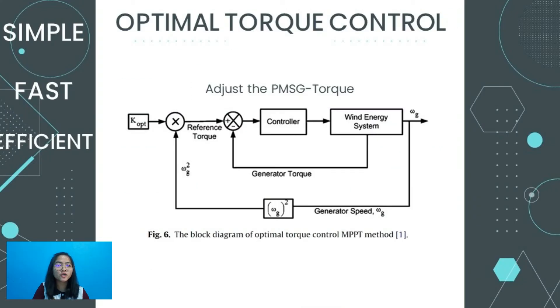The optimum torque or OT control was the next MPPT technique used. It can be observed from the block diagram that the principle of this method is to adjust the permanent magnet synchronous generator or PMSG torque according to the maximum power reference torque of the wind turbine at a given wind speed. So this method is simple, fast, and efficient. However, the efficiency is slower compared to TSR control method because it does not measure the wind directly, meaning the wind changes are not reflected instantaneously and significantly on the reference signal.